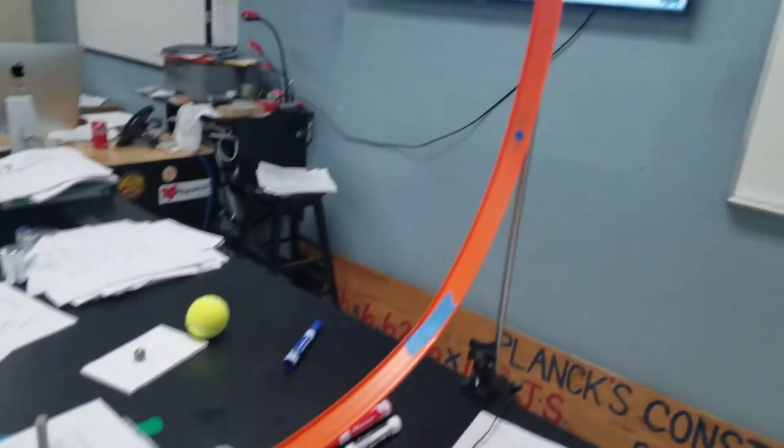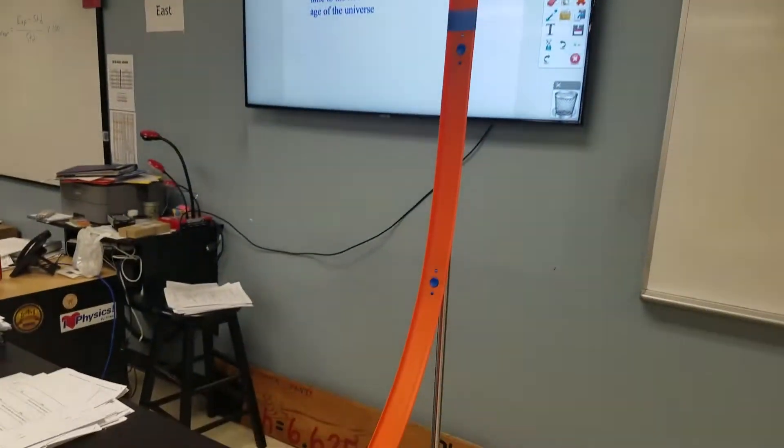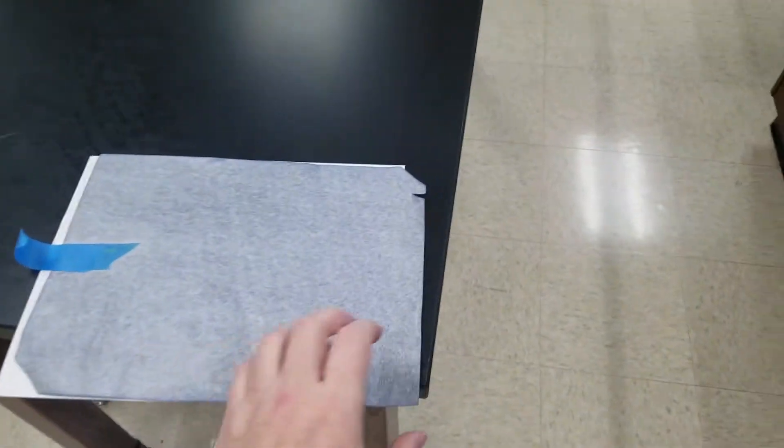So on this we're going to pick a spot to roll the ball down. It's going to go through those photo gates and then it's going to go to the floor. The way we're going to measure the range is I have some carbon paper here that when we put this down whenever that ball hits it's going to leave a mark so then we can measure from the vertical distance from where it left the table across the floor into where it hits.